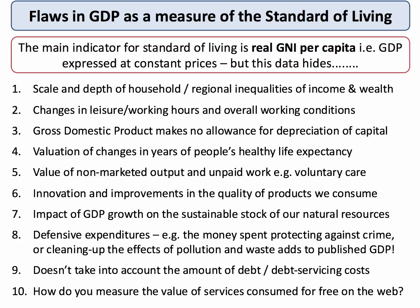Secondly, leisure and working hours. An increase in GDP might have been achieved at the expense of leisure time, for example if workers are required to work longer hours, or perhaps working conditions have deteriorated. There are plenty of industries in the UK offering fairly poor wages and difficult conditions. GDP might have gone up, but there could be a trade-off for family life and work-life balance.